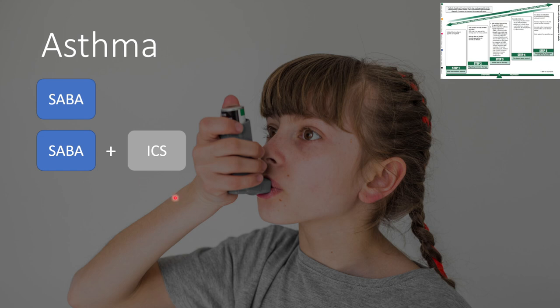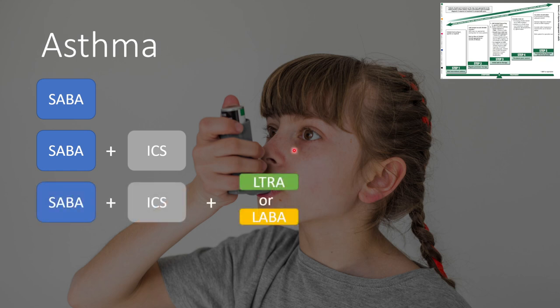Step two is adding an inhaled corticosteroid, a long-term medication given over a long period to reduce inflammation within the airways, improving bronchial diameter. Step three adds either a leukotriene receptor antagonist — montelukast — or a long-acting beta agonist such as salmeterol. These help prevent airway remodeling and keep the airways open.